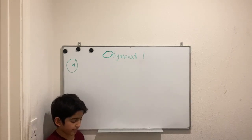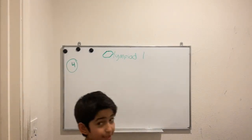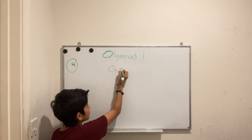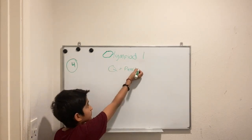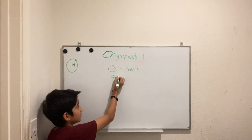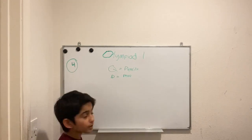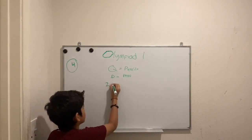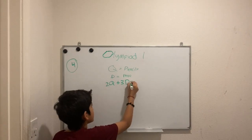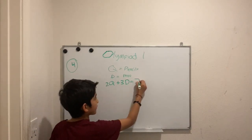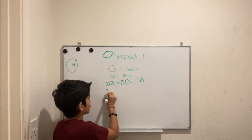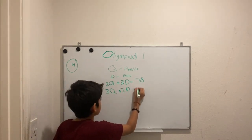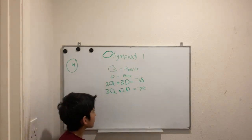Problem four says: in a stationery store, pencils have one price and pens have another. Two pencils and three pens cost 78 cents; three pencils and two pens cost 72 cents. How much does one pencil cost? Let q equal one pencil and d equal one pen. So: 2q plus 3d equals 78, and 3q plus 2d equals 72.